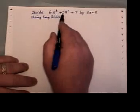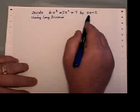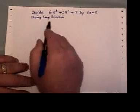Okay, in this question, we're going to divide 6x cubed plus 5x squared plus 7 by 3x minus 2 using long division.